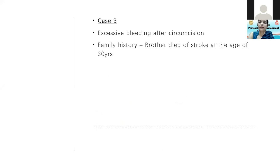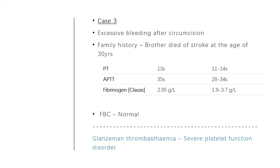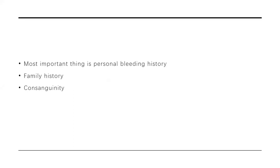Another case: a patient with excessive bleeding after circumcision, whose brother died of a stroke at age 30. Testing showed PT normal, APTT marginally high, and fibrinogen normal. The full blood count was also normal with a normal platelet count. Sometimes platelet functional disorders present with normal basic coagulation screening — normal platelet, normal PT and APTT — so if we didn't take a proper history, we might miss a bleeding disorder.